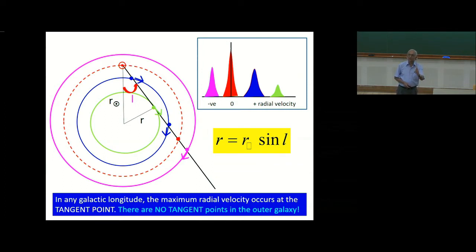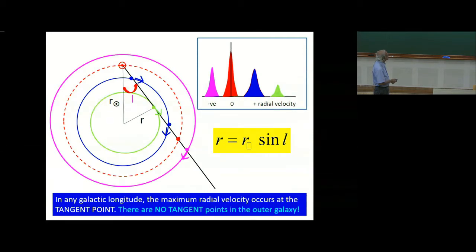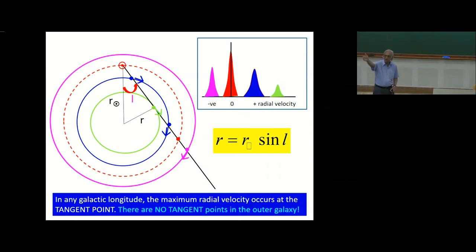The red Gaussian is at zero radial velocity relative to us — for example, a gas cloud on the same galactic circle as the sun will have zero velocity relative to us. There is the center of our galaxy and there is the sun; the distance between them is r_sun. There are clouds — red, blue, green, magenta — at different distances in that particular galactic longitude L in which I happen to be looking.